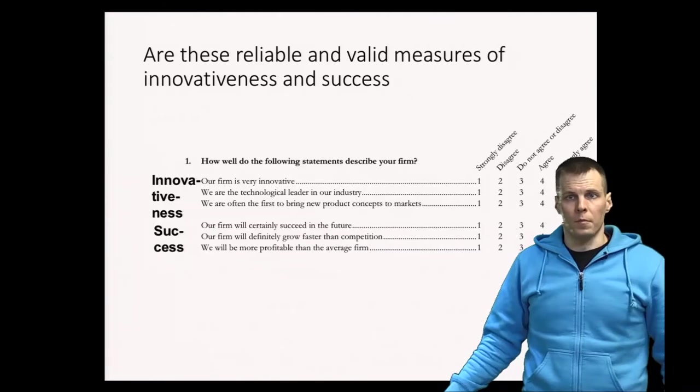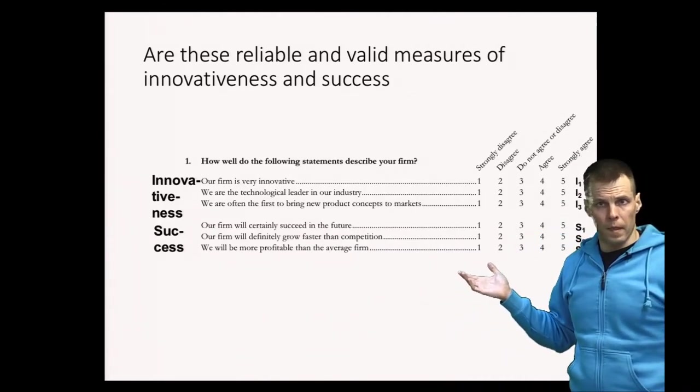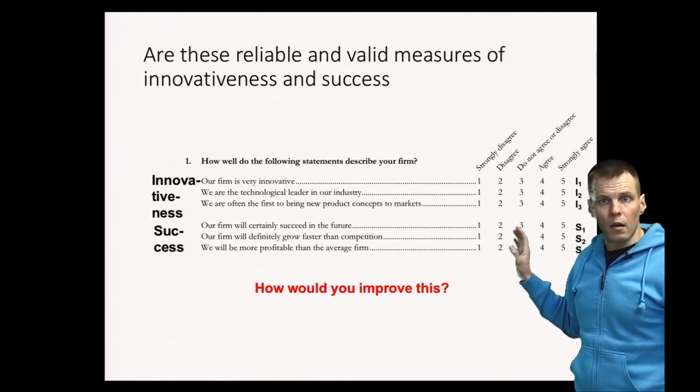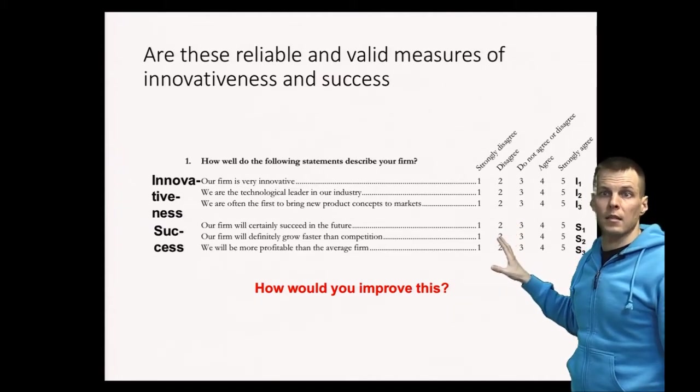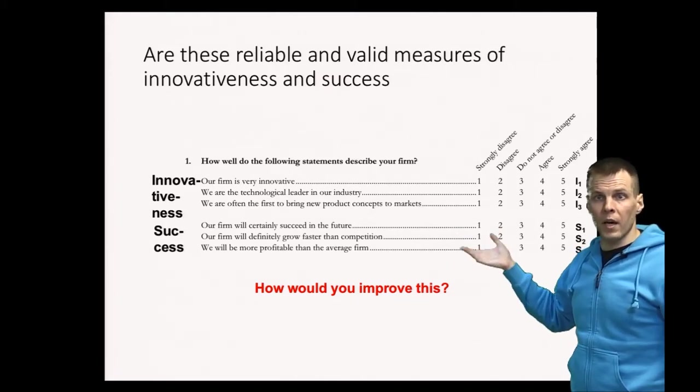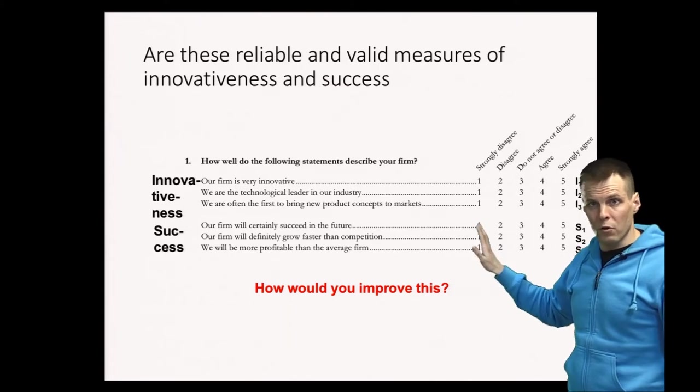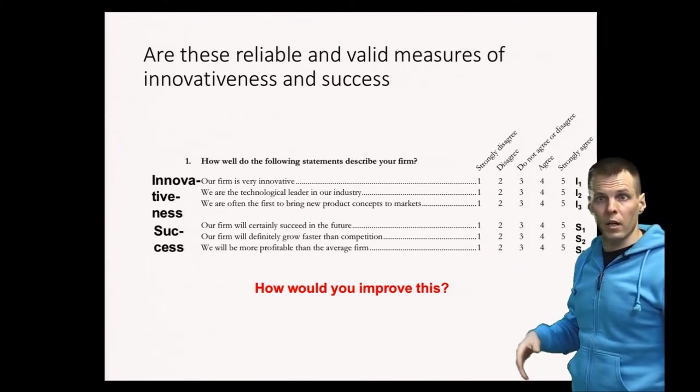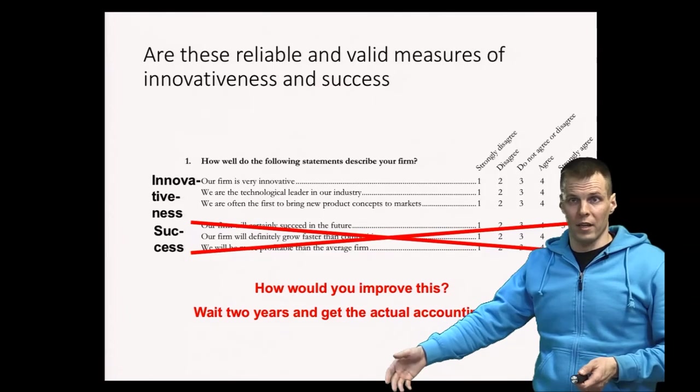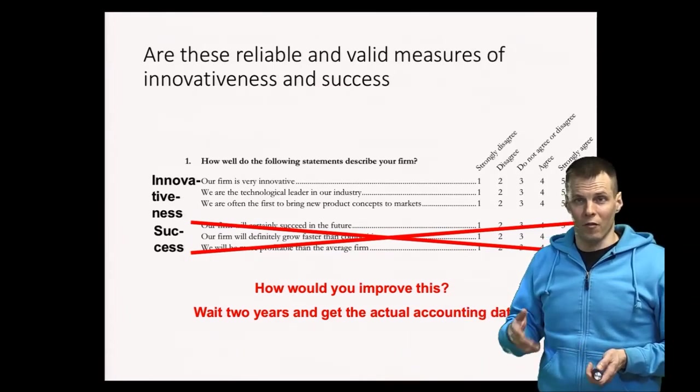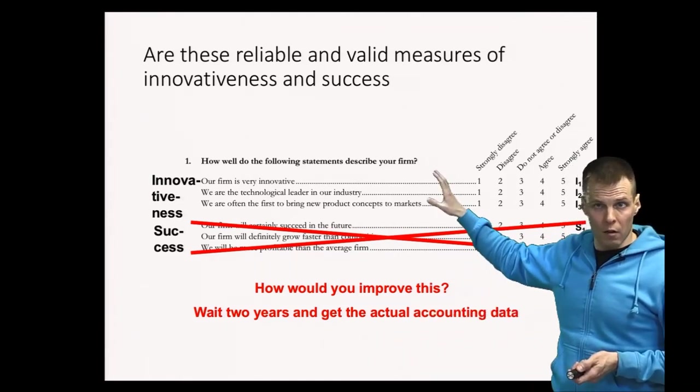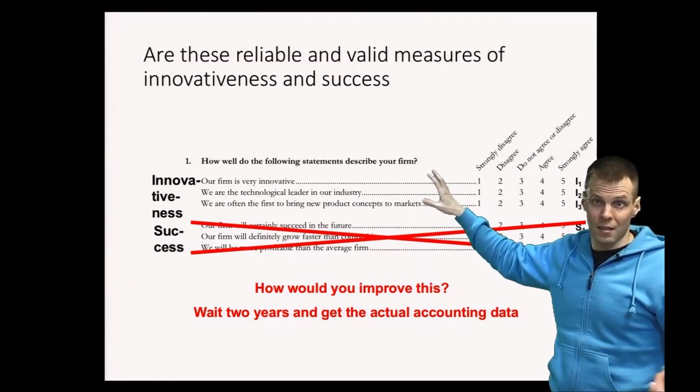Let's take a look at our example. So how would we improve this possibly common method variance contaminated survey form? We could of course do a second survey where we ask the performance or success implications half a year later, one year later. But even better, if we study companies, we don't actually have to measure this success with a survey. We can rely on accounting data. So we wait two years, then we get the actual accounting data: what kind of growth or what kind of profitability the company actually reported. And then we compare whether those companies that were innovative grew more or were more profitable than less innovative companies.